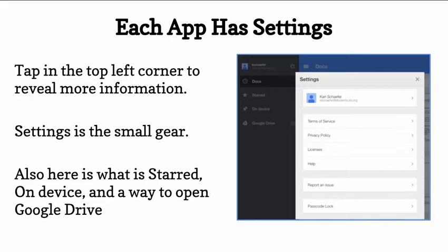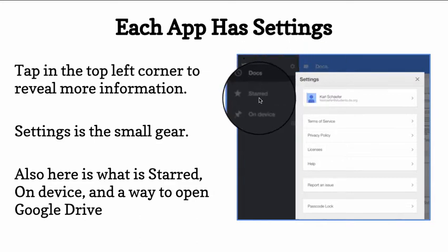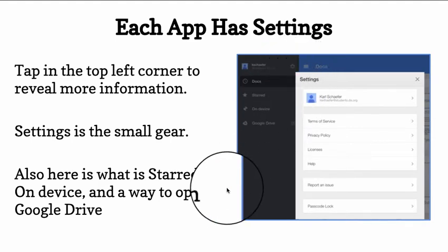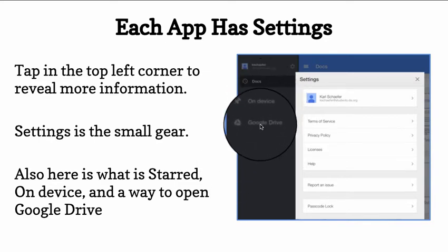Each app has settings. If you tap in the top left corner by the three lines, you'll see the settings. Settings is the small gear. Also, here is what is starred on the device, and actually a way to open Google Drive.